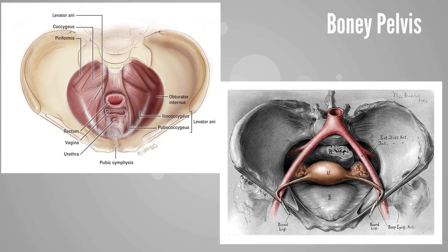The lesser pelvis, or true pelvis, contains pelvic organs such as the uterus, vagina, bladder, fallopian tubes, ovaries, and distal rectum and anus. It is formed by the sacrum and coccyx posteriorly, and the ischium and pubis laterally and anteriorly.